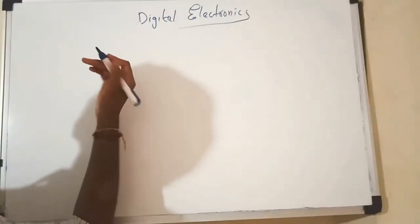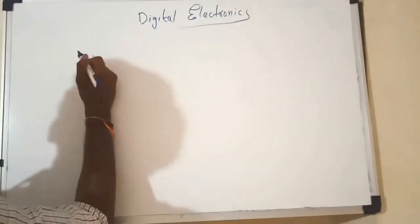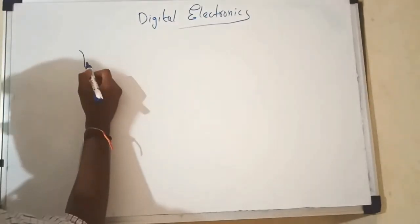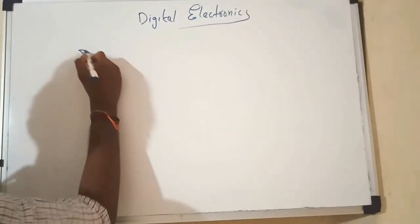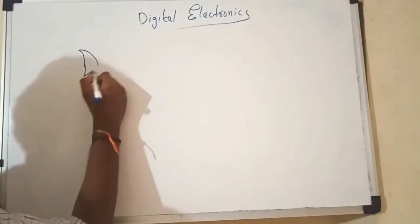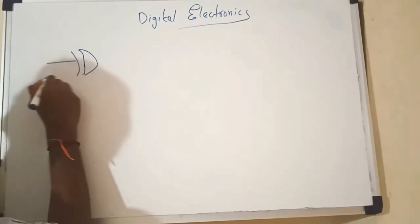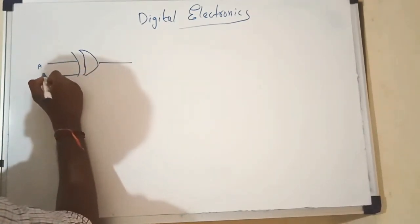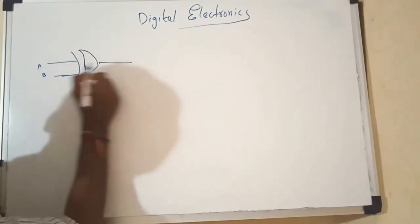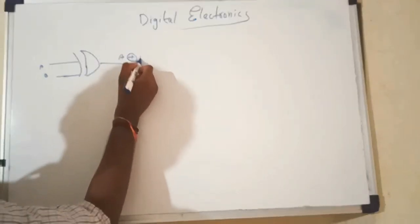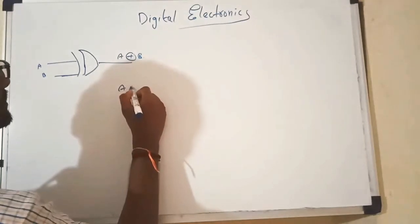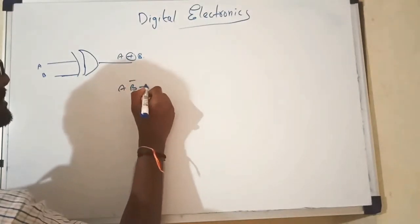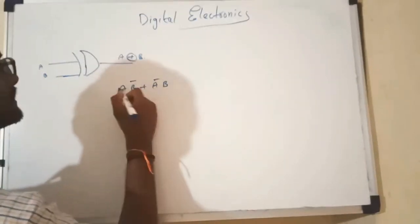Now let us see some important logic diagrams. We know that this is an XOR gate. This is A, this is B, and this is A XOR B, which is nothing but AB-bar plus A-bar B.